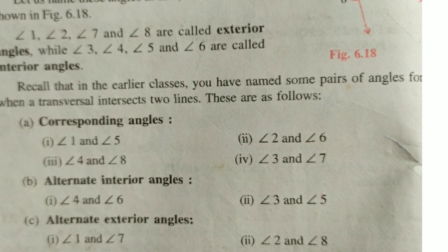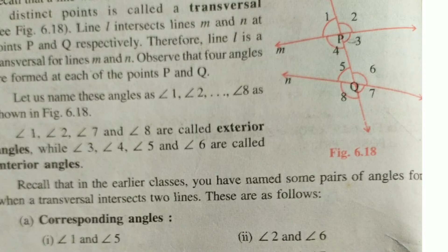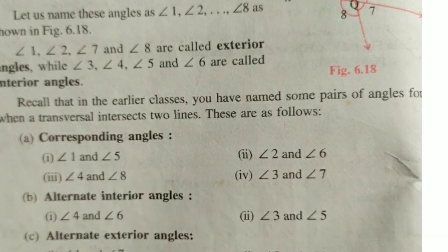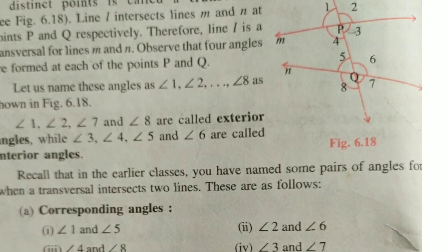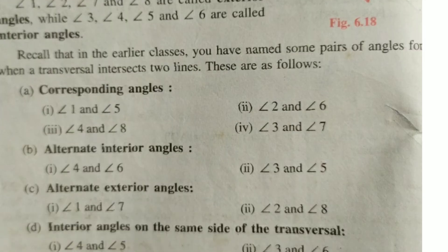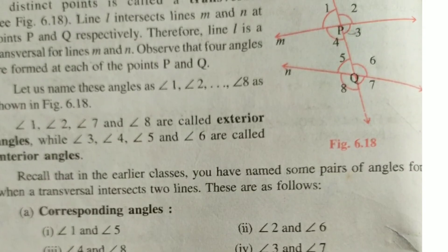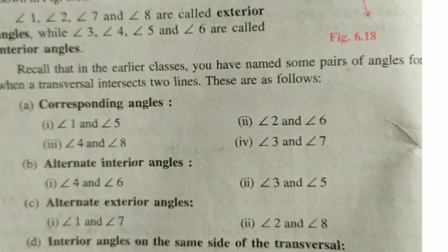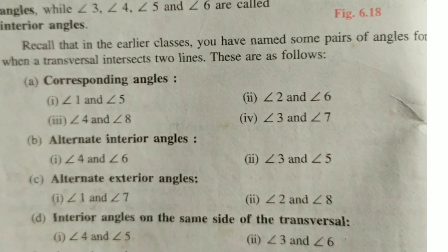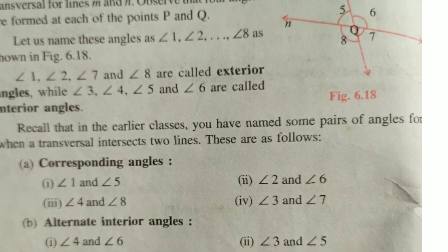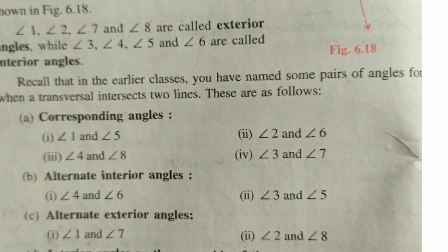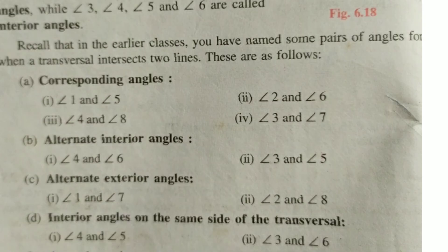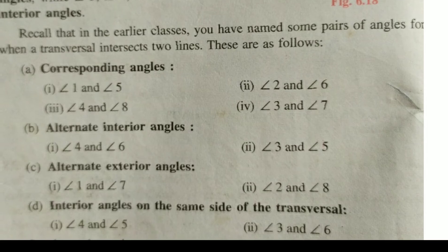Alternate exterior angles are the angles outside the interior region. Angle 1 and angle 7 are alternate exterior angles, and angle 2 and angle 8 are also alternate exterior angles. Interior angles on the same side of the transversal: angle 4 and angle 5, and angle 3 and angle 6 are interior angles on the same side of the transversal.